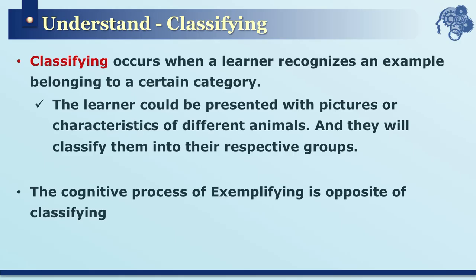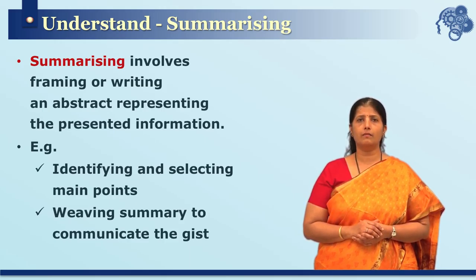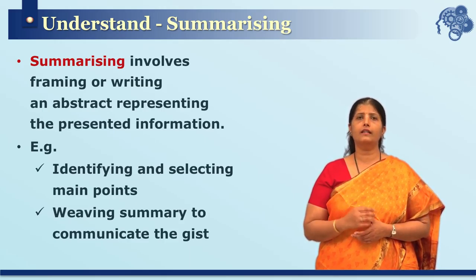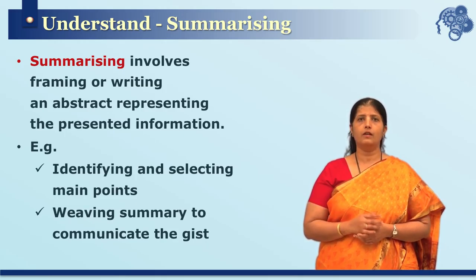The next subcategory is classifying. The learner is presented with different examples to classify or categorize under certain categories or concepts. For example, given different examples of animals, the learner should classify them under the respective classes based on their features and characteristics. The cognitive process involved in classifying is exactly opposite to that of exemplifying.